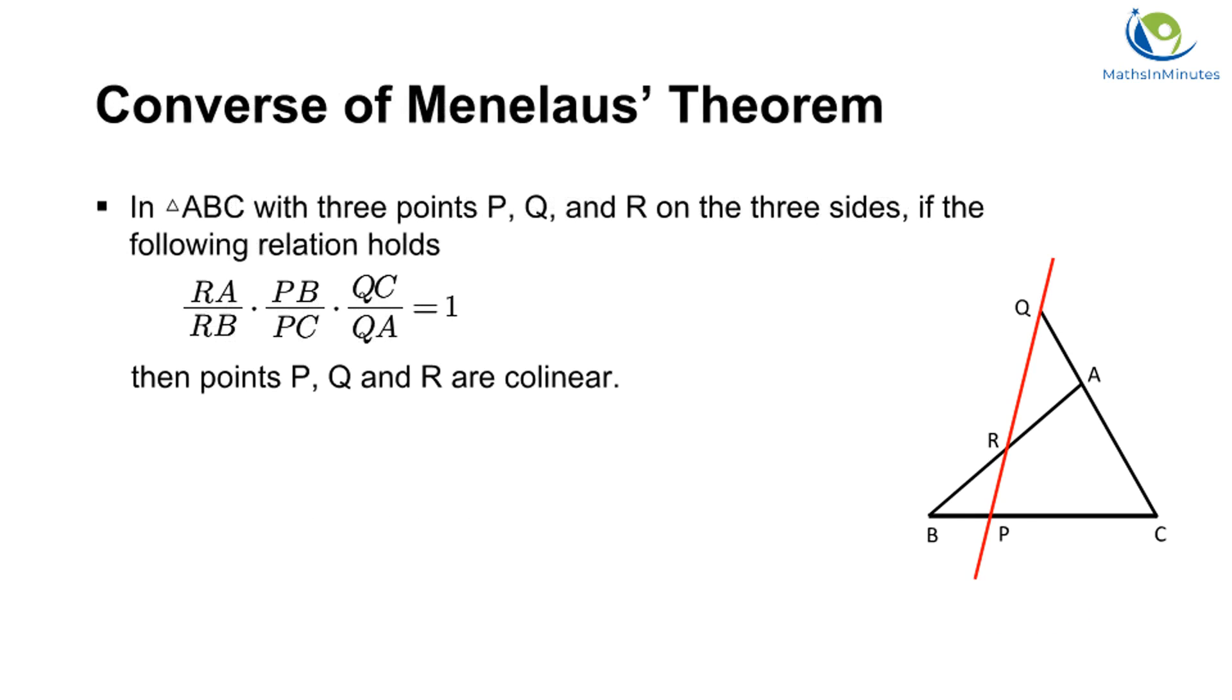The converse of Menelaus Theorem is also true. If the three points P, Q, and R on the three sides of triangle ABC have the Menelaus relation, we can conclude that the three points are on the same line.